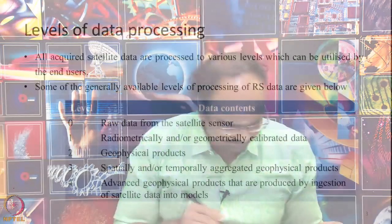First, we will understand the basic levels of data processing. Level 0 is the raw data from the satellite sensor — whatever comes in from the satellite is called level 0. It will normally not be shared with the user, because as mentioned, it contains not only data about the earth but also information about the spacecraft, and the data itself may not be really useful. It has to undergo various error corrections, scaling, and so on. Normally, level 0 data is not shared with users. Then the useful part of the data will be extracted and subjected to radiometric calibration, geometry calibration, and error correction, giving us level 1 data.